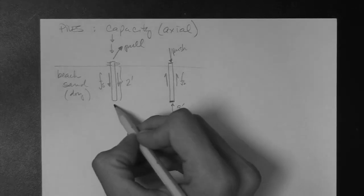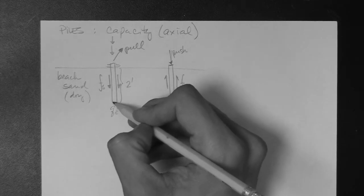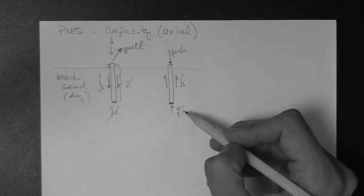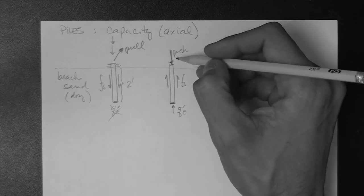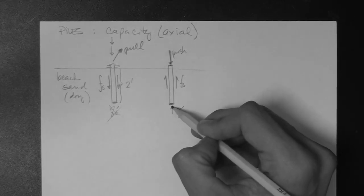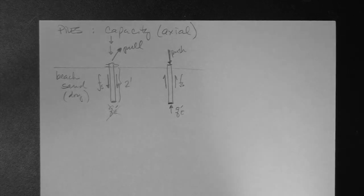In this case, there is no end bearing because the pile is being pulled. There is no reason for any stress to develop here, so this is gone. But in this case, where we actually apply a load that is vertically directed axially downwards, then there is a development of this end bearing resistance.